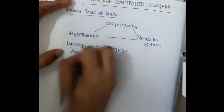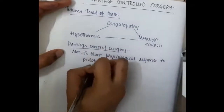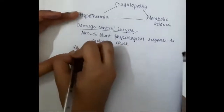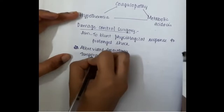In damage controlled surgery, the main aim is to blunt the physiological response to prolonged shock. Whenever a person has hemorrhage leading to hemodynamic shock, or anything that has resulted in instability in the body, the patient is hemodynamically unstable. The reason for that instability can be anything.